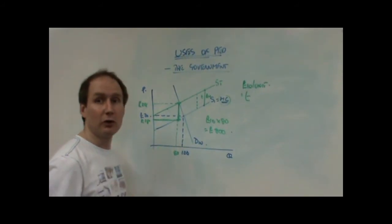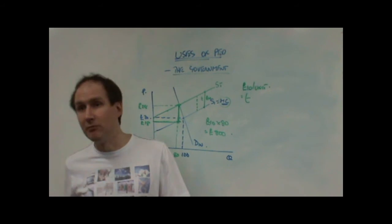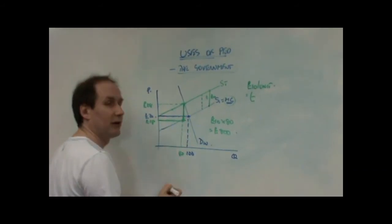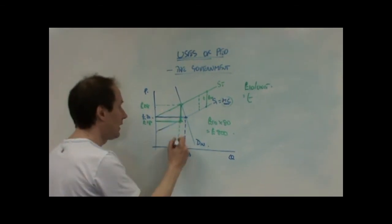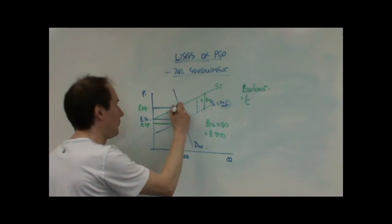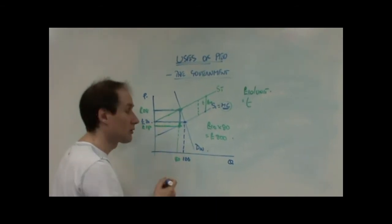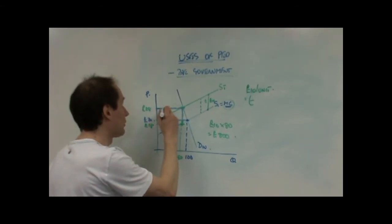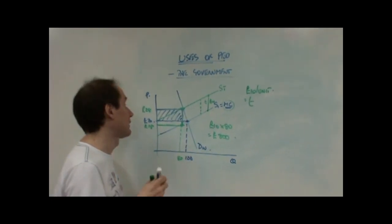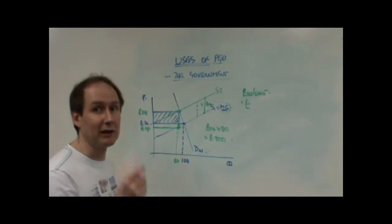Effectively, the consumer is paying most of this tax. From the consumer's point of view, price used to be 20 pounds. Now, it's 28 pounds. 80 units have been bought. So, the consumer is paying an extra 8 pounds on 80 units. So, the consumer is paying that proportion of the tax.